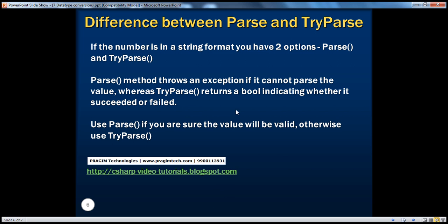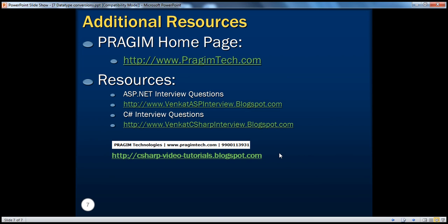So let's go back to the slides. If the number is in a string format, you have two options to convert from string to any data type — maybe integer, float, double, whatever. Parse and try parse. Parse method throws an exception if it cannot parse the value, whereas try parse returns a boolean indicating whether it succeeded or failed — true if successful, false if failed — but it doesn't throw an exception. In general, use parse if you are sure that the value will be valid and there is not going to be any exception. Otherwise, use try parse in case of any doubt. That's it for today. Thank you for watching. Have a great day.